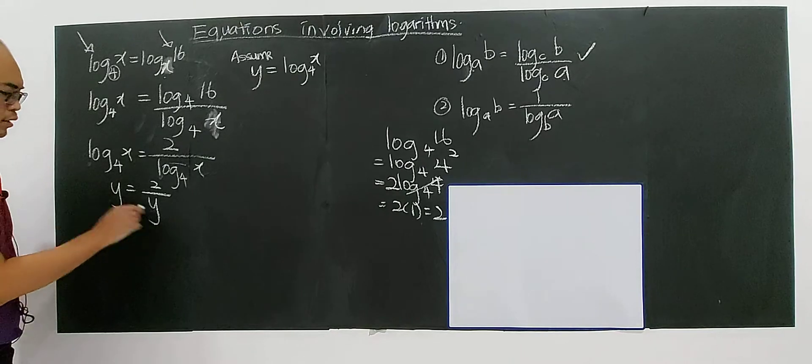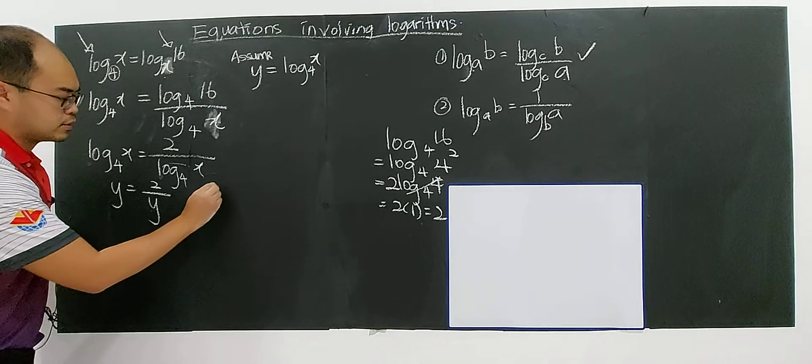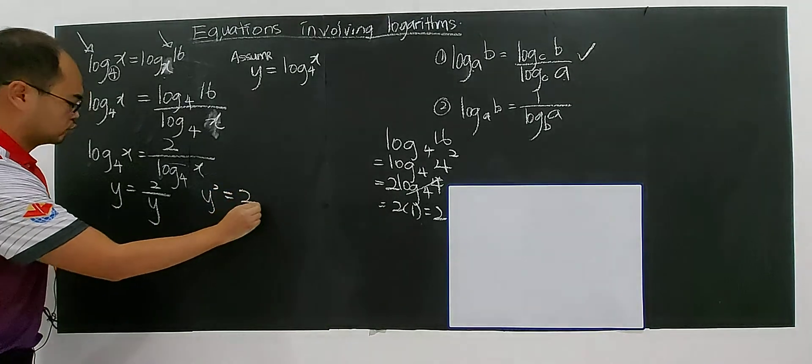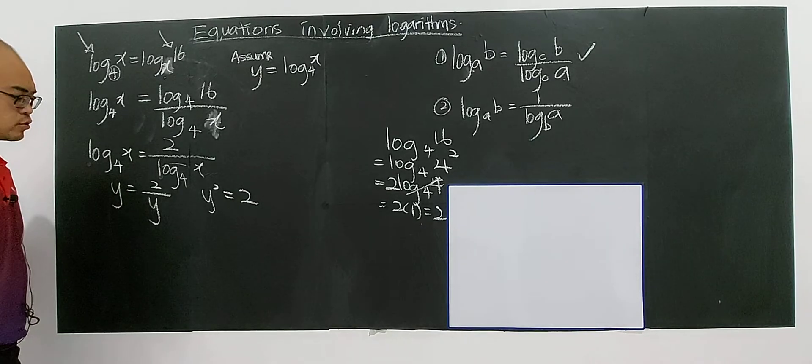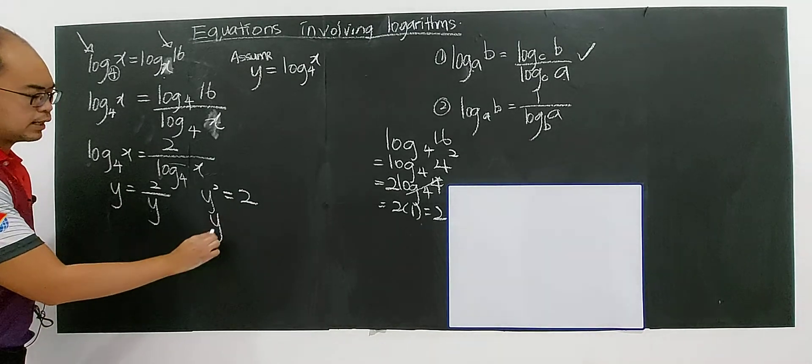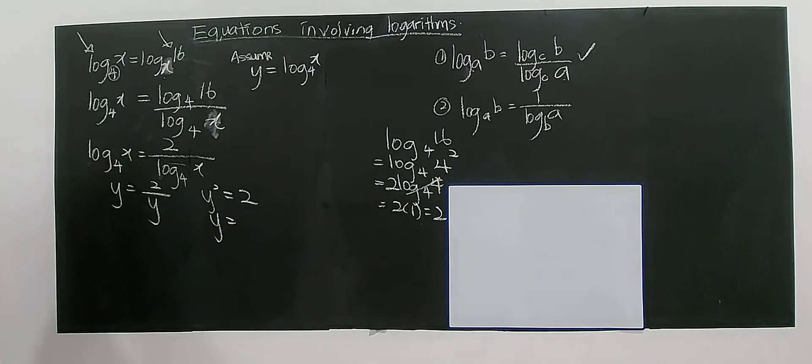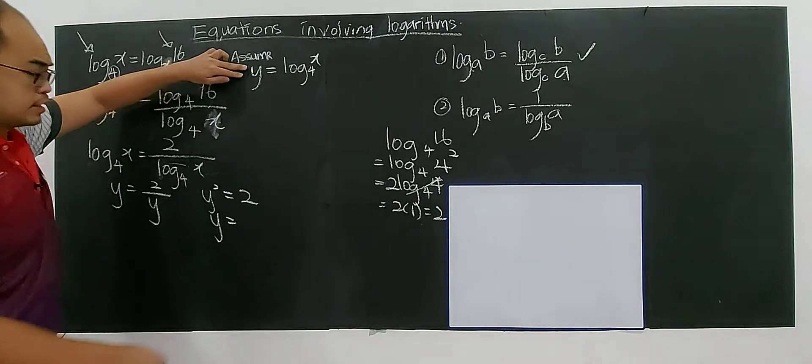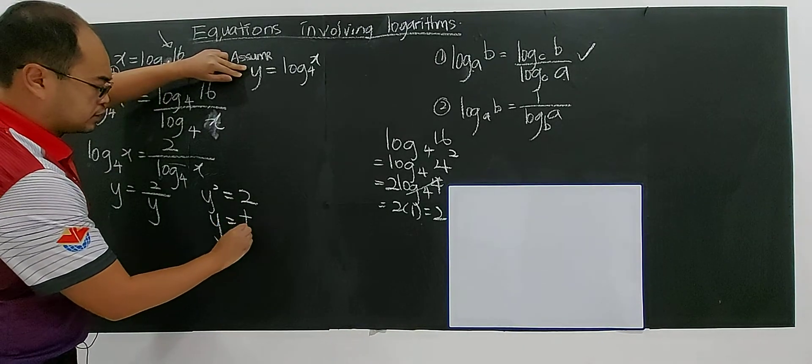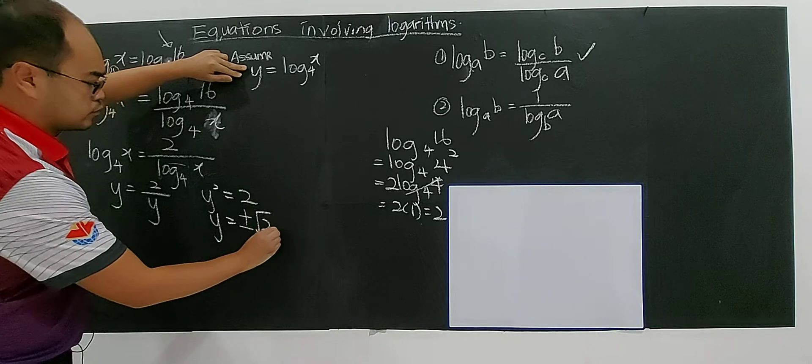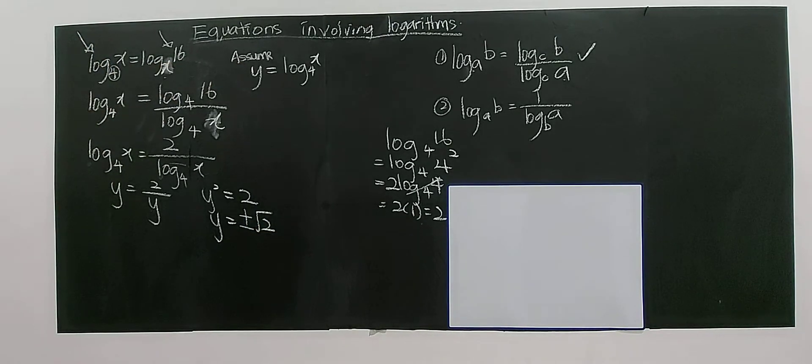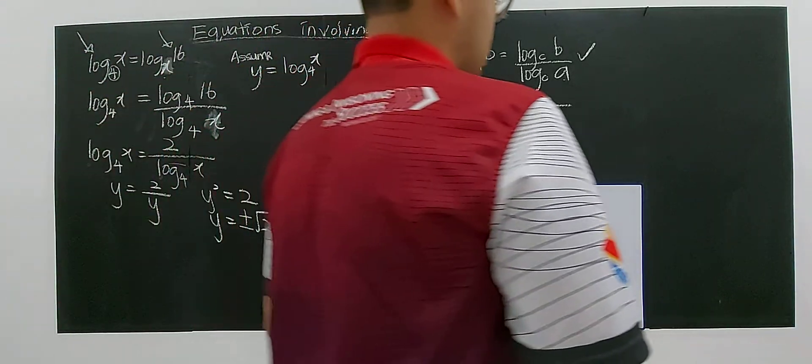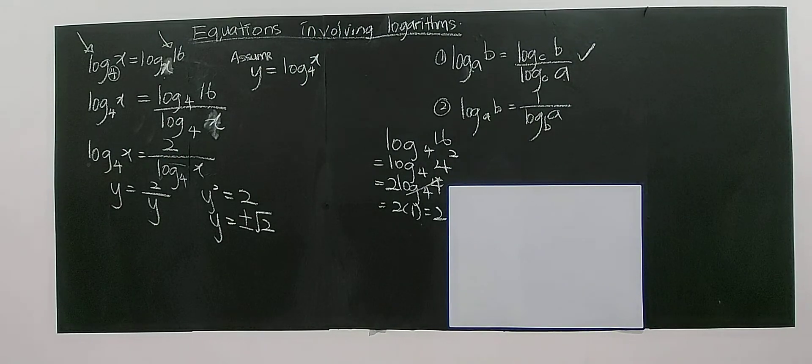Then you can solve this just like a quadratic. You have Y square equals to 2. Then Y is positive negative of square root of 2.